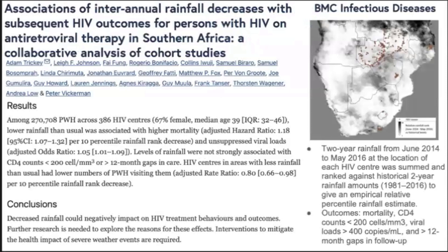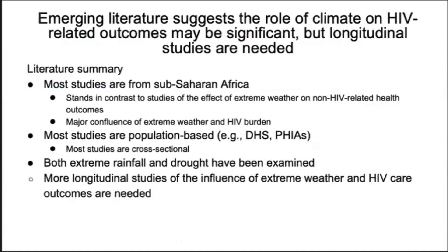Adam Tricky and colleagues longitudinally examined the association of decreased rainfall during 2014 to 2016 in Southern Africa with subsequent HIV care-related outcomes among people on ART. They found an association between decreased rainfall and higher all-cause mortality and detectable viral load, as well as fewer HIV care visits, concluding — which we agree with — that further research is really necessary to understand the mechanisms behind any causal effects that might be operating.